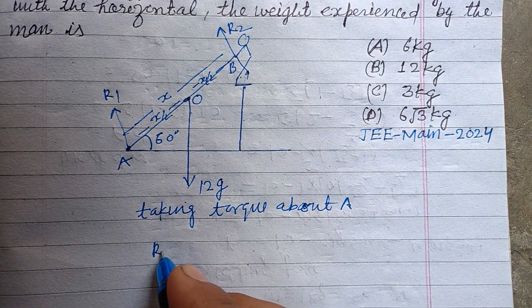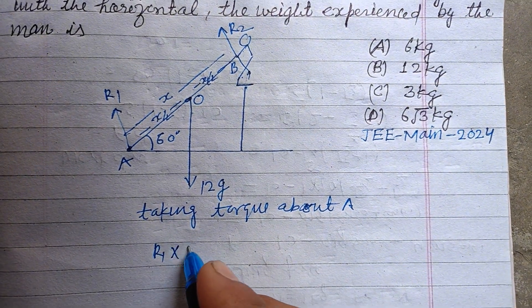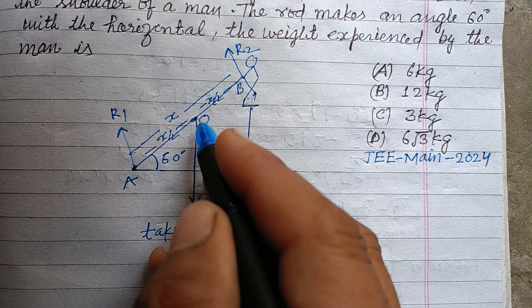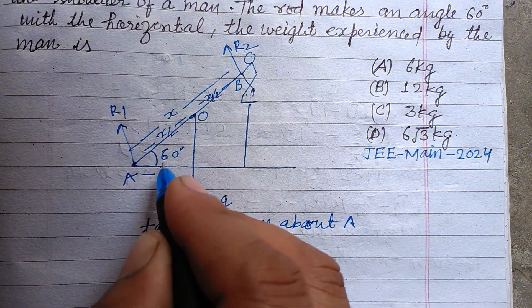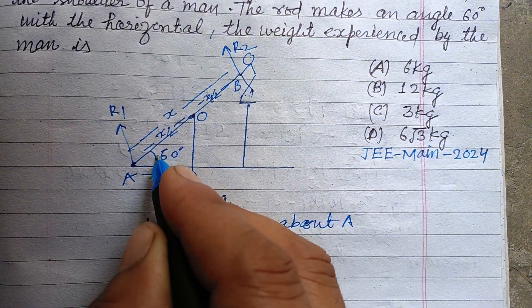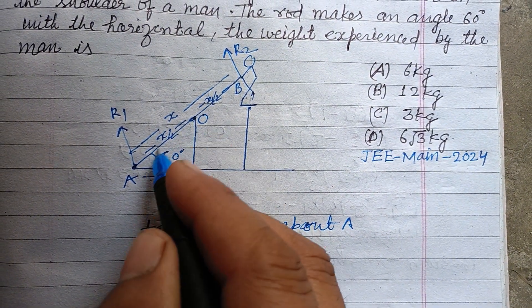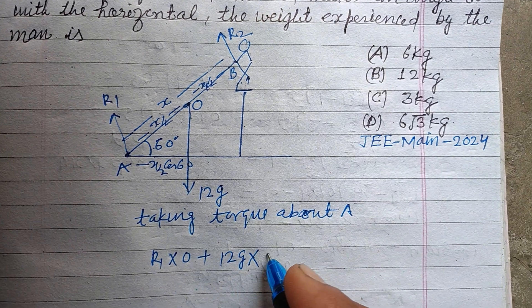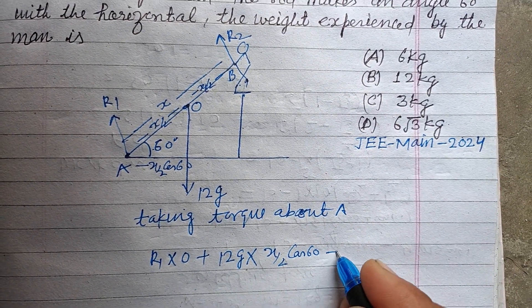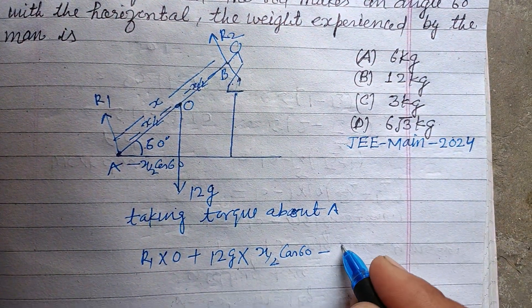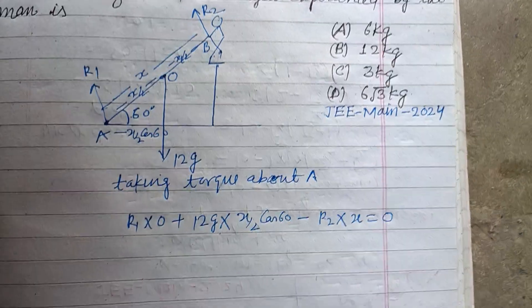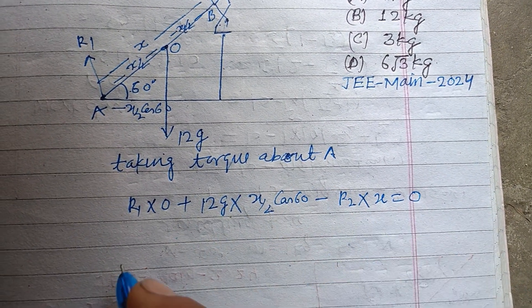So R1 into 0 plus 12g into its distance. This distance is X/2 cos 60 because this is 60 and this is X/2. So this is in opposite direction. So R2 into distance X equals 0. So torque about A is 0.